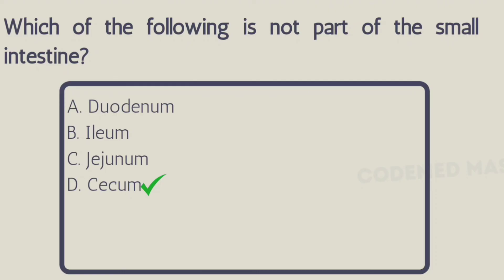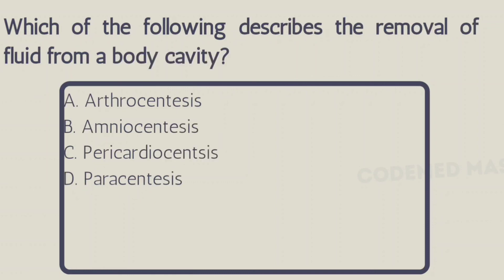If you get confused during your CPC exam, you can refer to the anatomical illustration section in the CPT book. It is also present in your ICD book as well as your HCPCS book. Next question: which of the following describes the removal of fluid from a body cavity? Option A: arthrocentesis, Option B: amniocentesis, Option C: pericardiocentesis, Option D: paracentesis. The right answer is Option D, paracentesis.